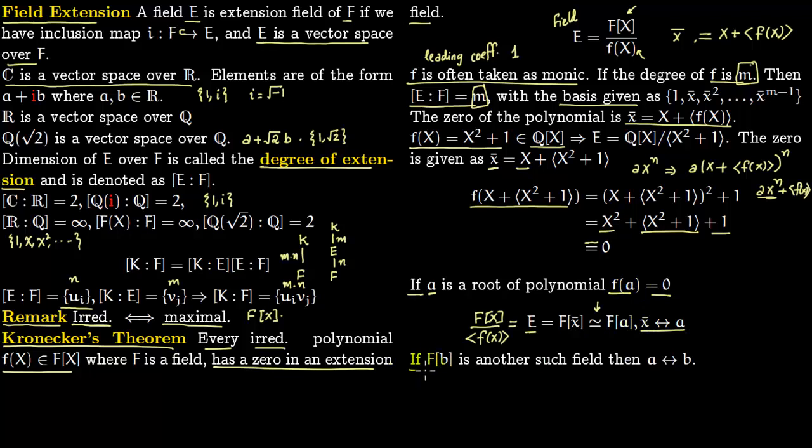If you have f(b) is another such field such that f(b) = 0, so b is another zero, then you have an isomorphism between a and b. This F[a] would be same as F[b]. Something like unique up to isomorphism because then you can interchange a and b. Send a to b and b to a and you have another isomorphism.